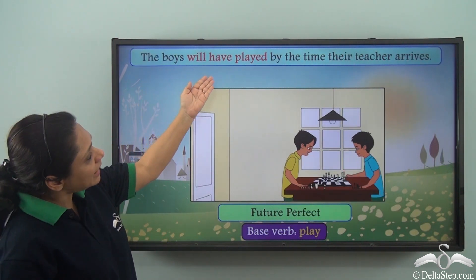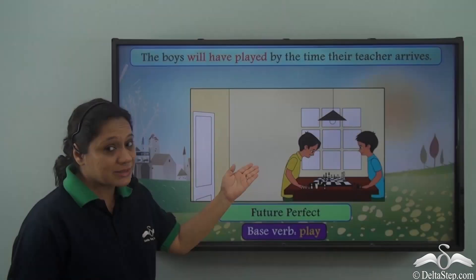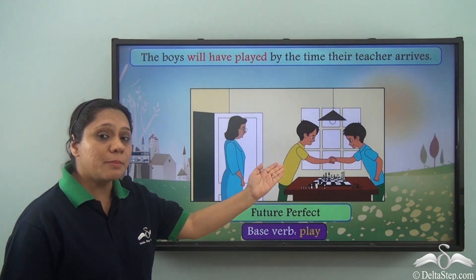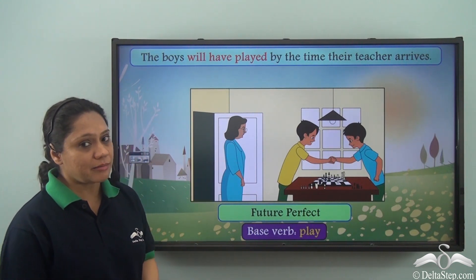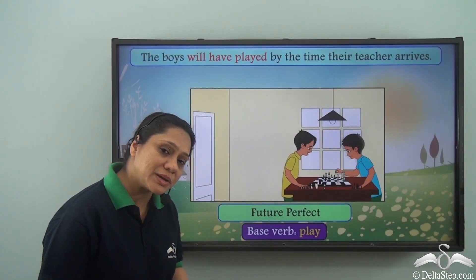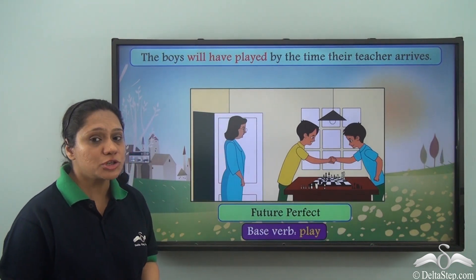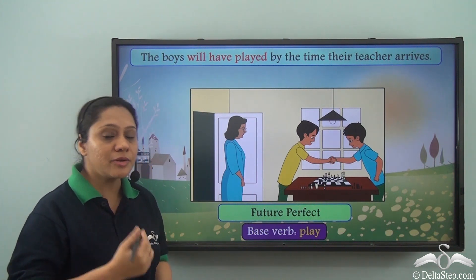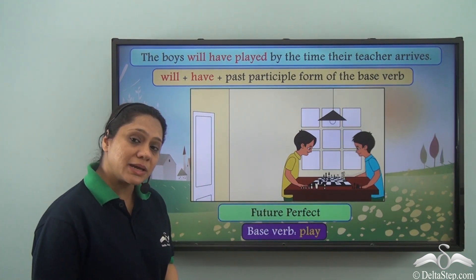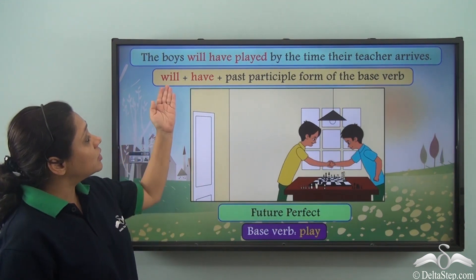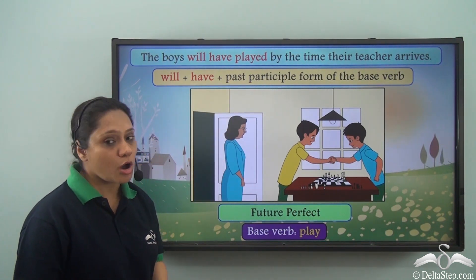The boys will have played by the time their teacher arrives. In the future, the boys will have finished their game before their teacher arrives. So the future perfect tense tells us that an action will be completed in the future before another action in the future. The verb in the future perfect tense is made by using 'will' with 'have' and the past participle form of the base verb.